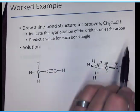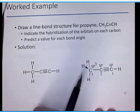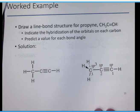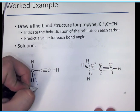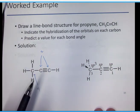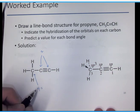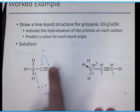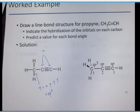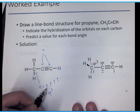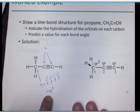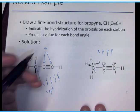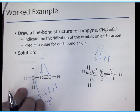For propyne, the structure shows three lines between two carbons — a triple bond. You have CH3, then a carbon triply bonded to another carbon, which has a single bond to hydrogen. Looking at each carbon: the CH3 carbon has four domains so it's sp3 (s, p, p, p). The two carbons in the triple bond each have only two domains, so both are sp hybridized — two domains means two orbitals merge to form sp.